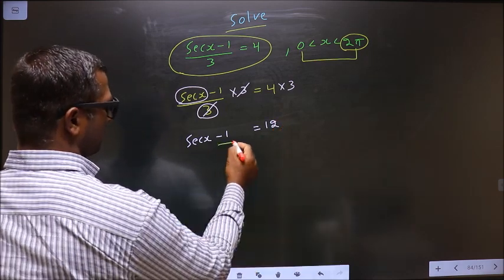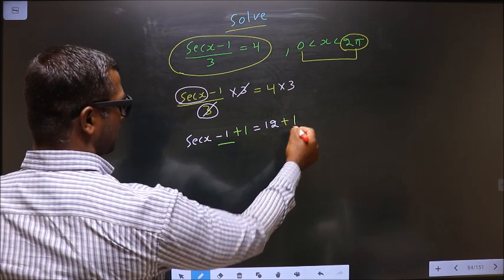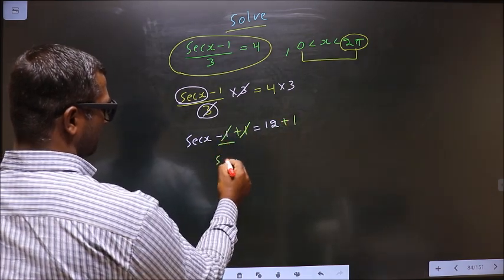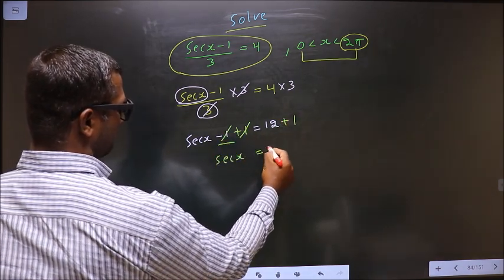Now to remove minus 1, you add 1 on both sides. So you get secant x equal to 13.